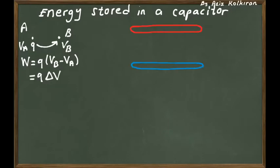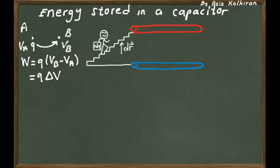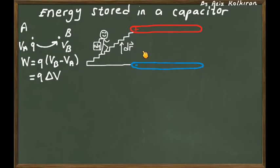Suppose you have two plates that are initially neutral with no charge. One by one, you bring positive charges from the lower plate to the upper plate. Initially there is no electric field, but once you have different charges on the different plates, you create a potential difference and an electric field between them.